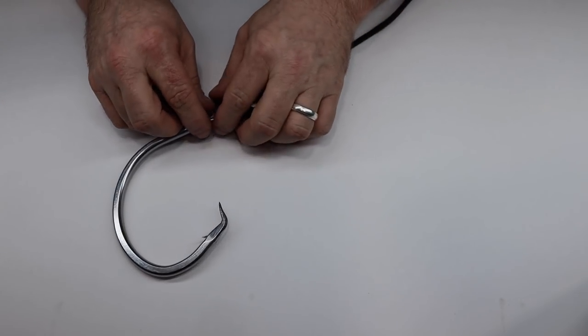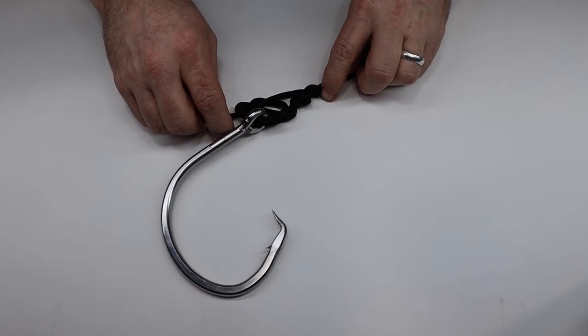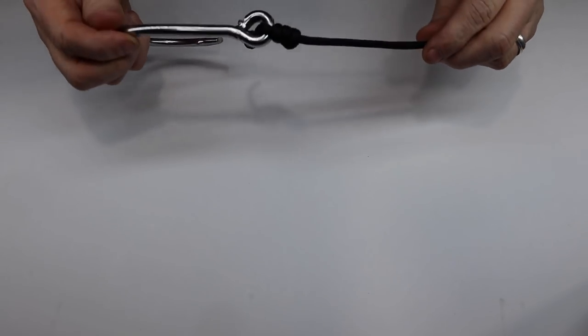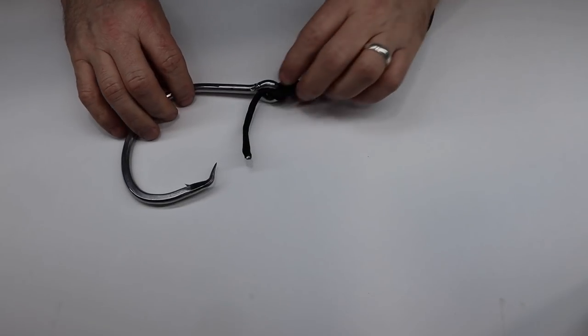And like I said on the Palomar knot, before you cinch it, make sure you lubricate it. The fisherman's knot works good when you got to tie a knot and you can't get your hook or your lure back through the loop.